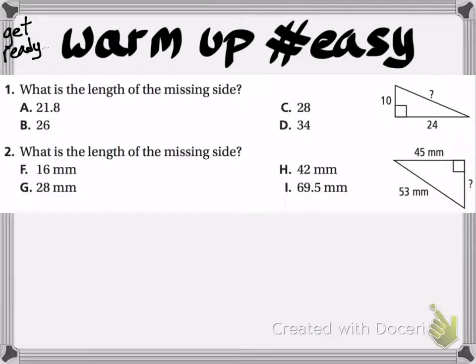Okay, the first answer, number one, you are trying to look for side c. So that means a and b are going to be plugged in right there to the Pythagorean theorem. You have 10 squared and 24 squared. 10 squared becomes 100, 24 squared becomes 576. Add them together, 676, take their square roots, and you get 26. B was the first answer.